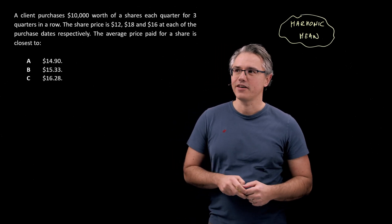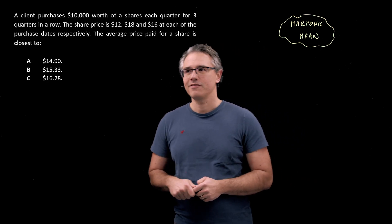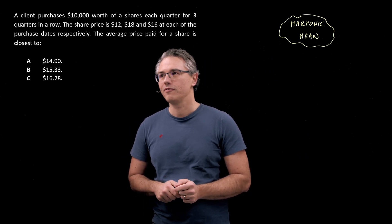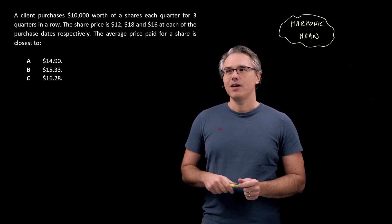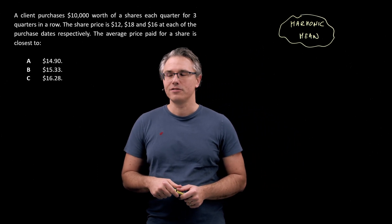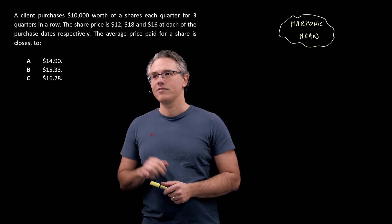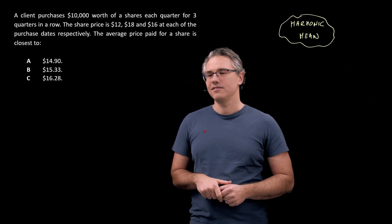So this is the question that I want us to have a go at. A client purchases $10,000 worth of shares each quarter for three quarters in a row. The share price is $12, $18 and $16 at each of the purchase dates respectively. The average price paid for a share is closest to.